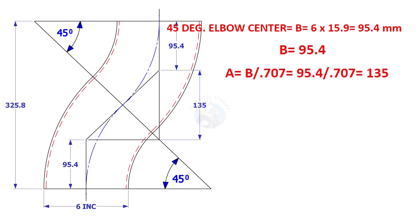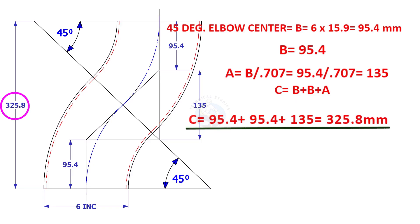A is B divided by 0.707, which is 135 millimeters. C is equal to 2B plus A, which equals 325.8 millimeters.